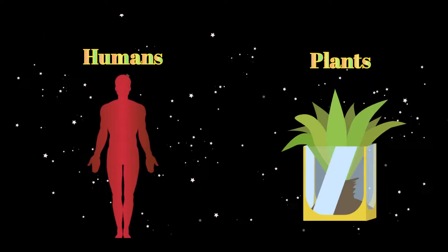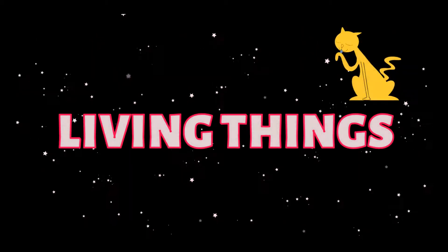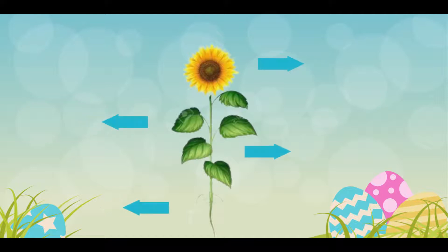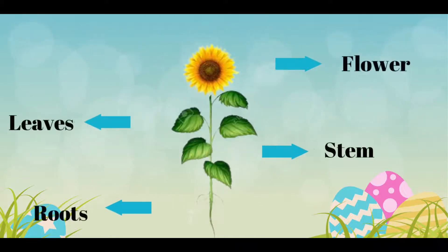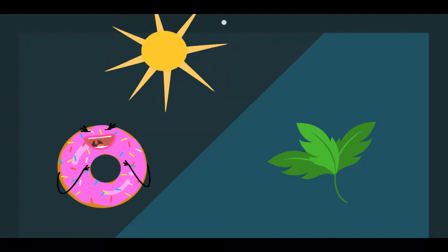...and plants really are? We have so many similar functions and features. We all are living things. Some of the most important parts of the plant are the flowers, the leaves, the stem, and the roots. This is the leaf.